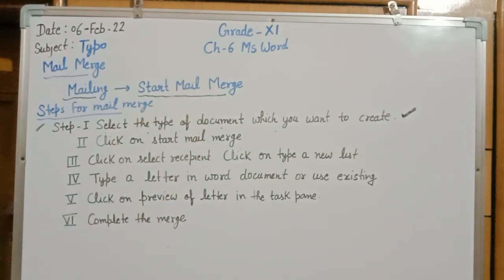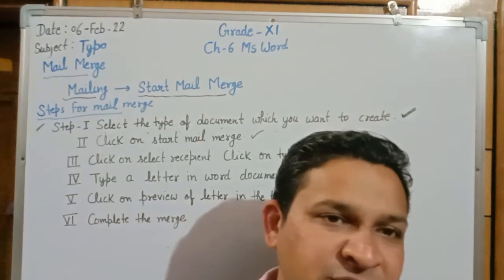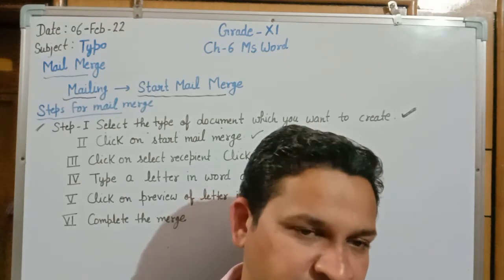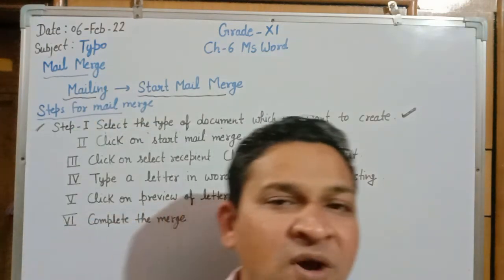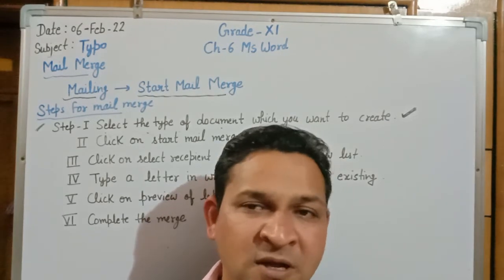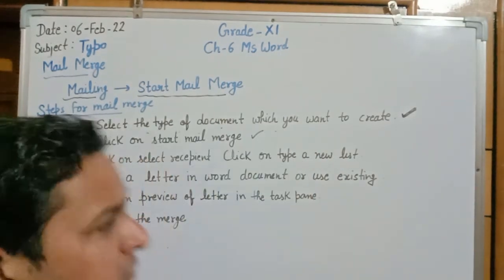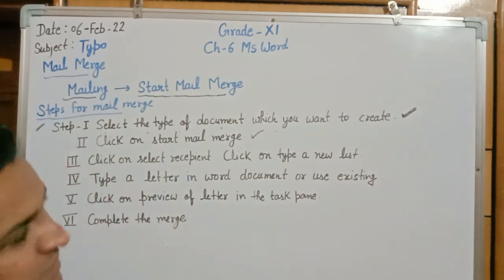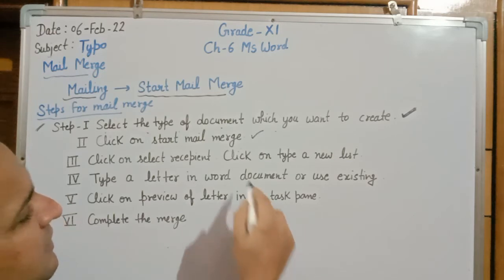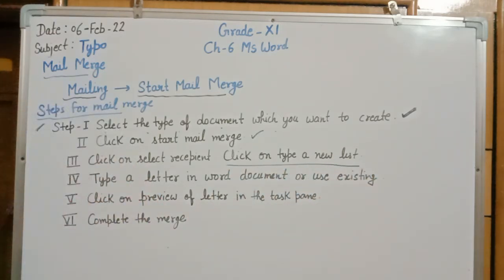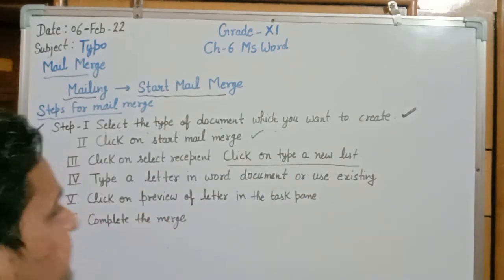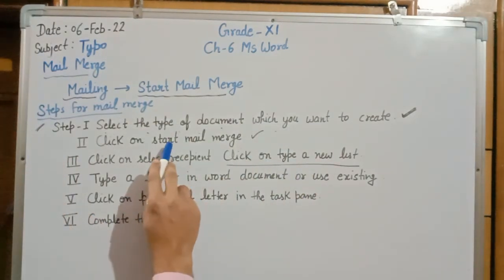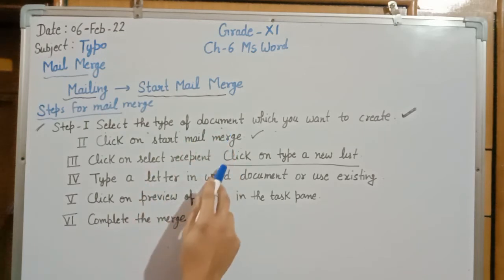After selecting the document type, click on Start Mailbox — this is the second step. The third step is to click on 'Select Recipients'. Suppose you want to make a list of 50 recipients — click on Select Recipient, then type all recipient addresses or names in a new list file. Click on New List and prepare a list of all recipients who will receive the same letter.